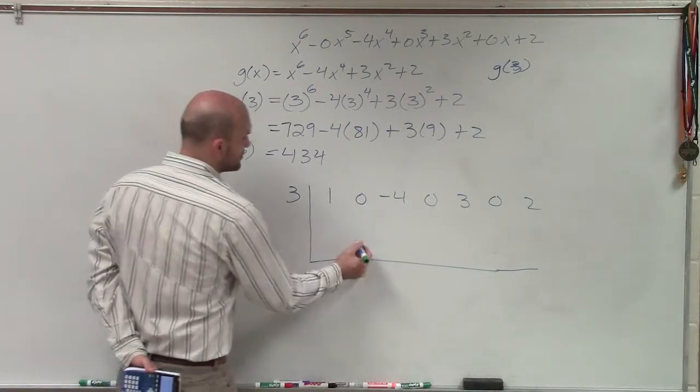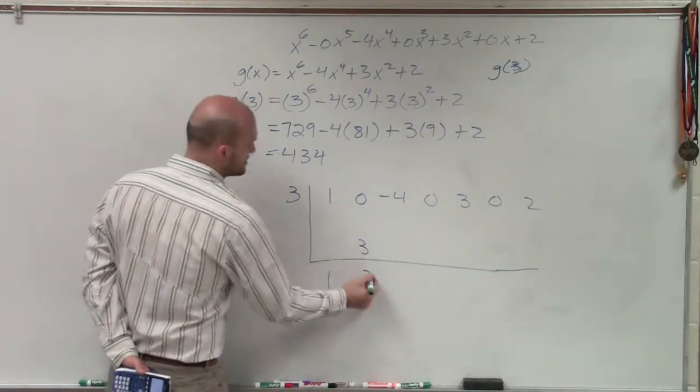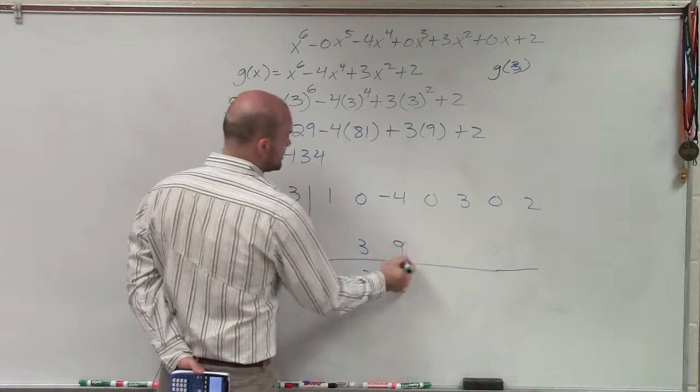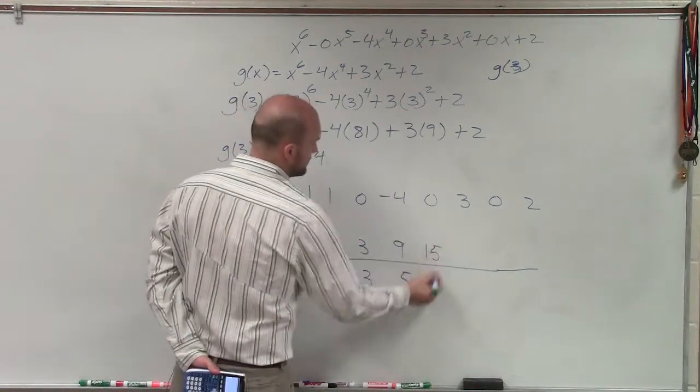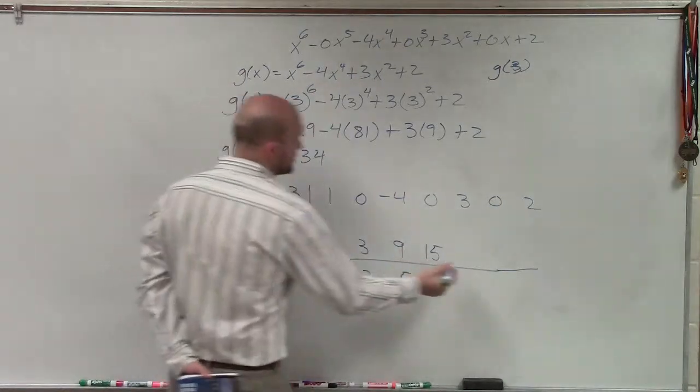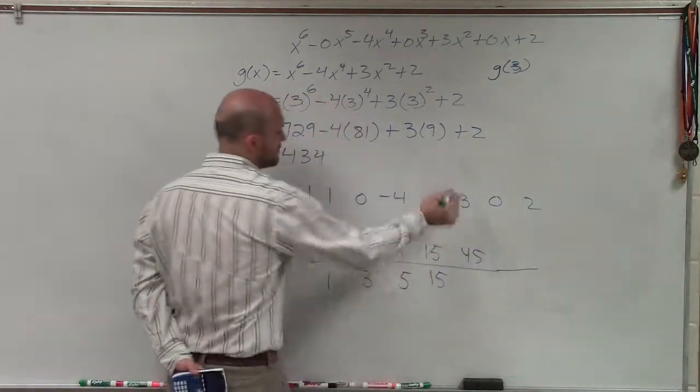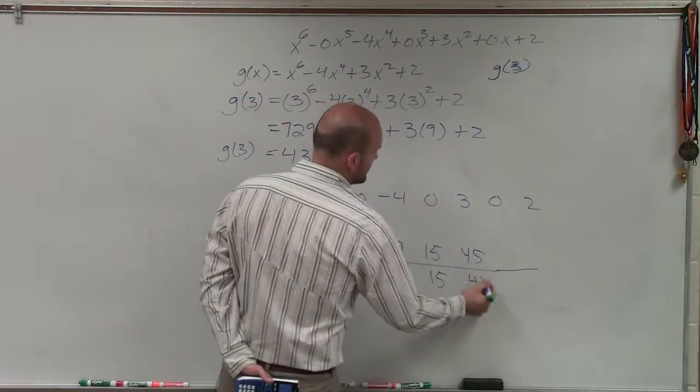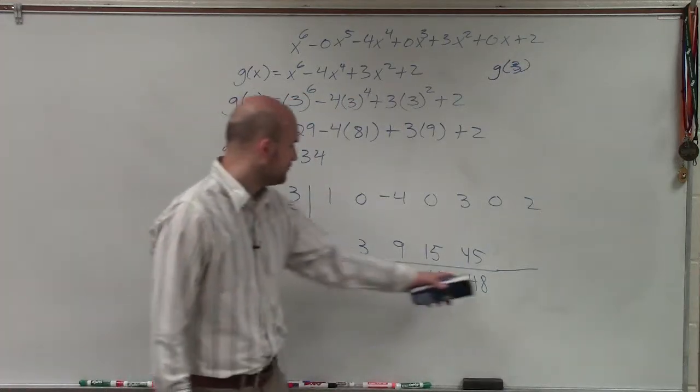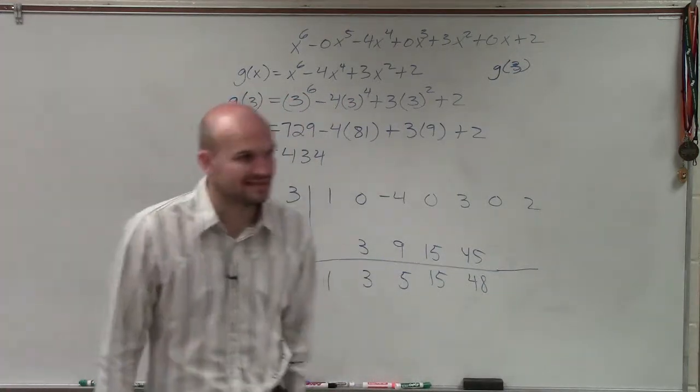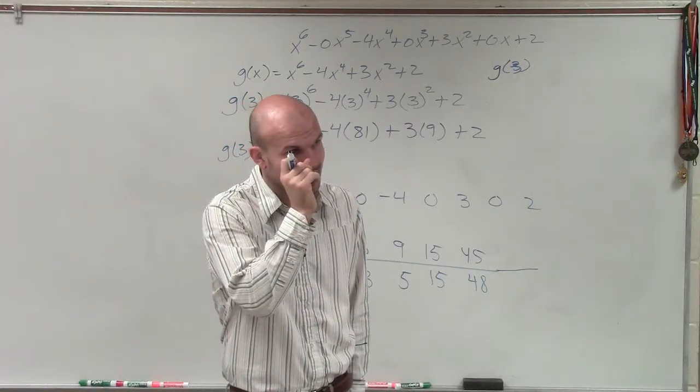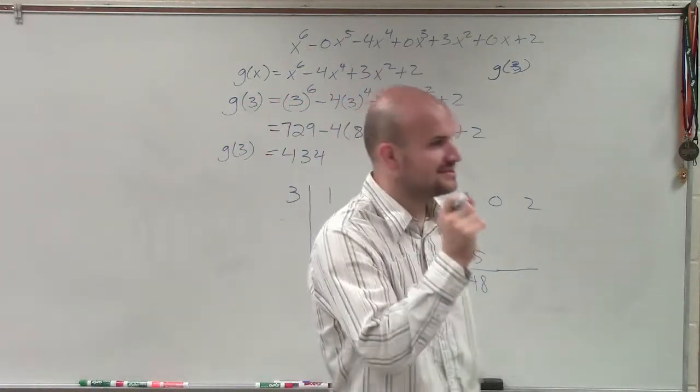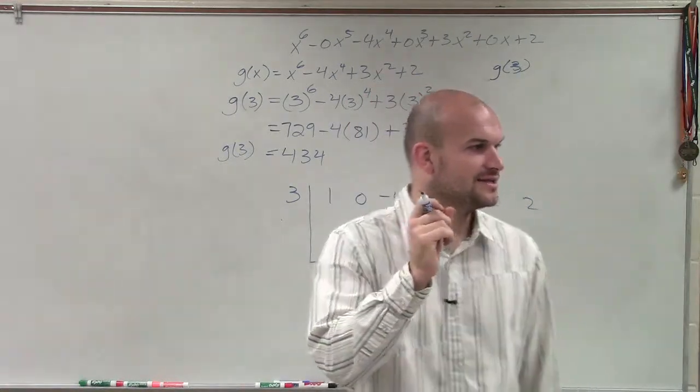So I bring down the 1. 1 times 3 is 3. 0 plus 3 is 3. 3 times 3 is 9. That becomes a 5. 5 times 3 is 15. 15 times 3 is 45. 3 plus 45 is 48. 48 times 3 is going to be 96. So it would be, sorry,